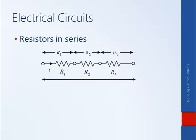Since charge is conserved, however much current is flowing through the first resistor must also flow through the subsequent resistors. And since voltage is a potential difference, the total voltage difference across all three resistors is just the sum of the individual voltages — for example, three volts across the first, two across the second, and one across the third gives a total of six volts.